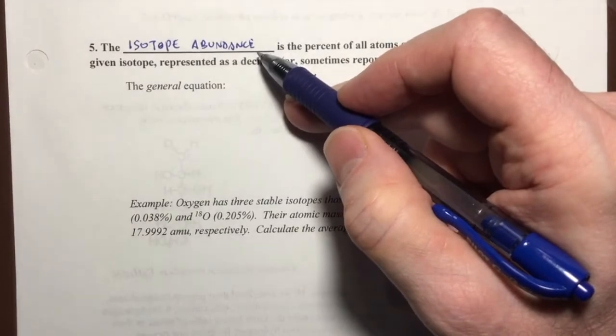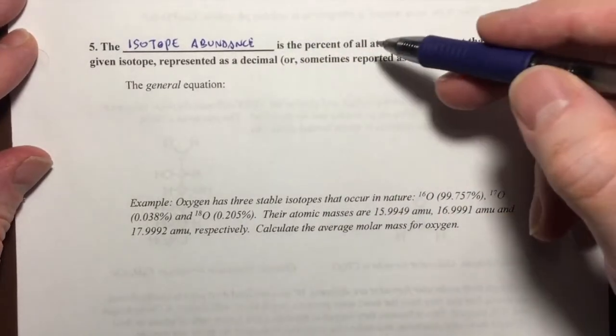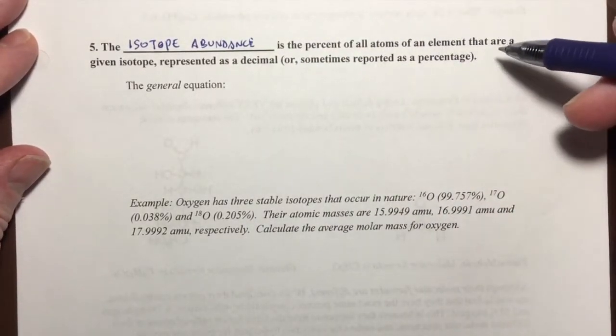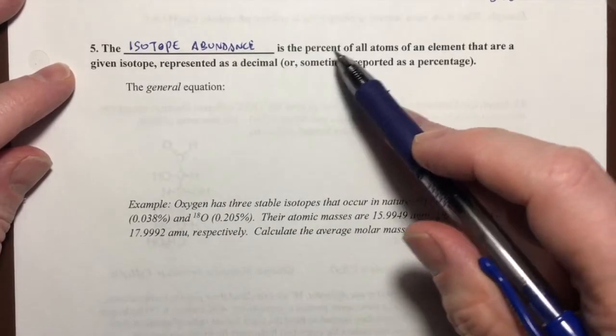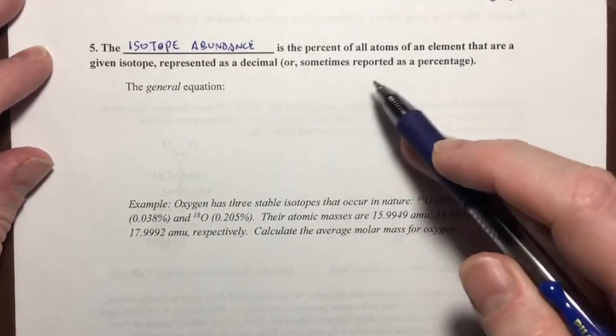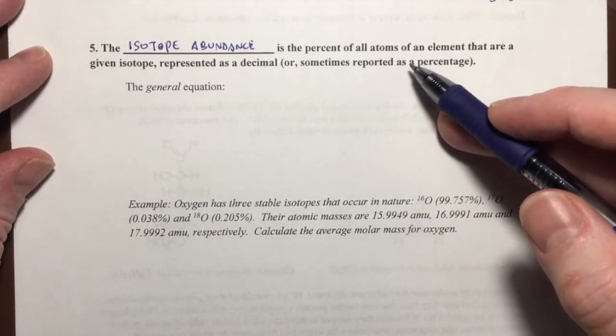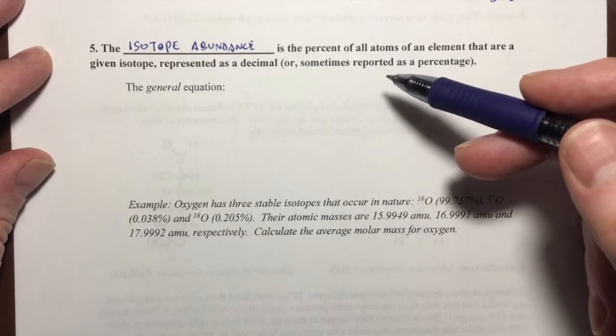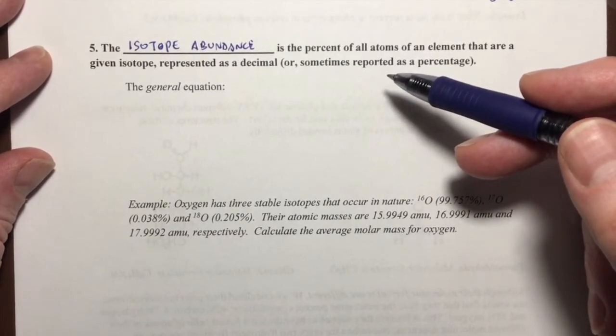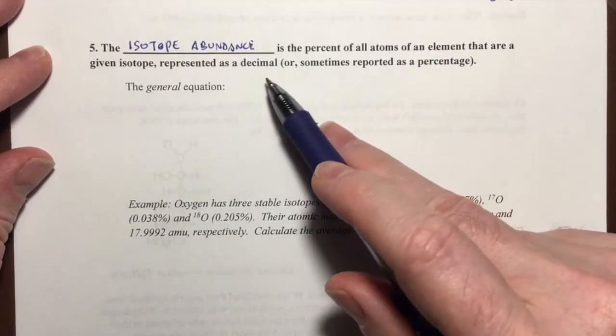Isotope abundance means the relative amount of how much you will find in nature. The isotope abundance is the percent of all atoms of an element that are a given isotope, represented as a decimal or sometimes as a percentage. The isotope abundance is basically the percentage of atoms that is a particular isotope. So, what is the percentage of carbon that is made up of the carbon-13 isotope, and so forth. You can represent this as a decimal or as a percentage.